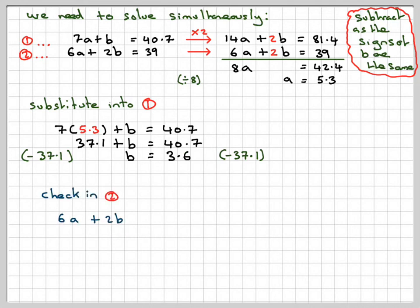Checking in equation 2: 6A + 2B = 39. So 6 times 5.3 plus 2 times 3.6 equals 31.8 plus 7.2, which equals 39. That's correct.